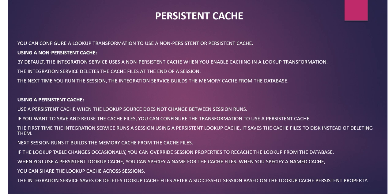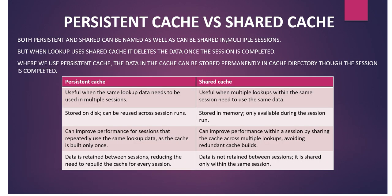Let's understand the difference between shared cache and persistent cache. Both persistent and shared cache can be named and shared across multiple sessions. However, when a lookup uses the shared cache, the data is deleted once the session completes. In persistent cache, the data is stored permanently and can be used later. Use persistent cache when the same lookup data needs to be used across multiple sessions; use shared cache when multiple lookups within the same session need to use the same data.